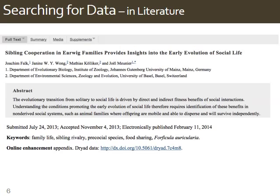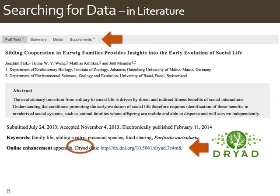In this case, this article is in the journal American Naturalist. Your eye is normally drawn to the abstract, but you also want to look for supplemental material and any links to data sets, which will be at the top or at the sides, generally. This example has a supplements tab, and the data set link is at the bottom. This will vary journal by journal.